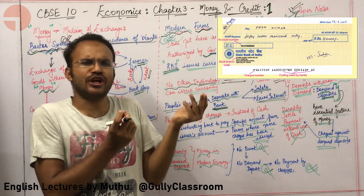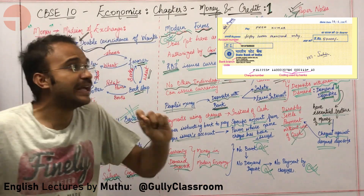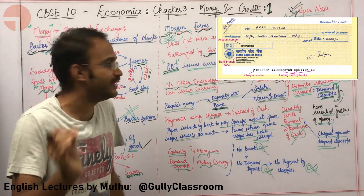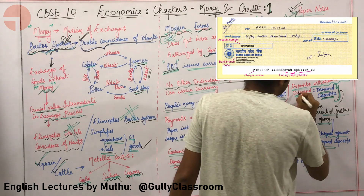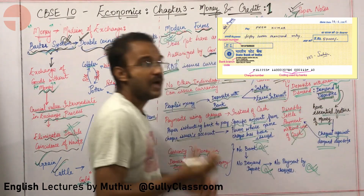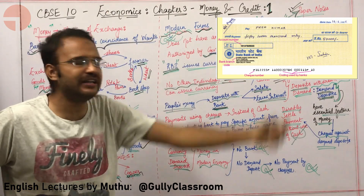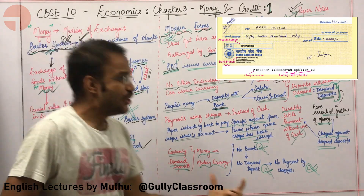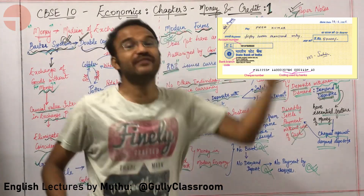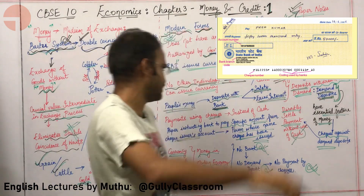If I have deposited a lot of money with the bank and suddenly there is a need, can I withdraw this money? Yes, absolutely — that is why it is called a deposit, specifically a demand deposit. What is a demand deposit? You can literally get your money on demand. Deposits can be withdrawn on demand, so they are called demand deposits.